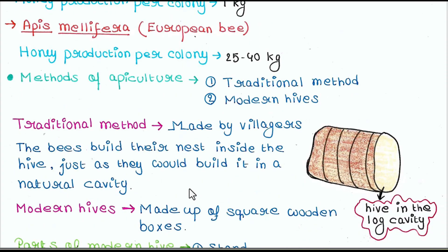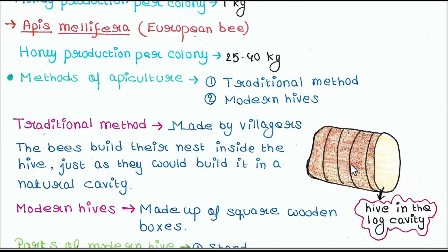Traditional method: these hives are made by villagers. The bees build their nest inside the hive just as they would build it in a natural cavity. The hive is made inside a log cavity where bees build their nest.